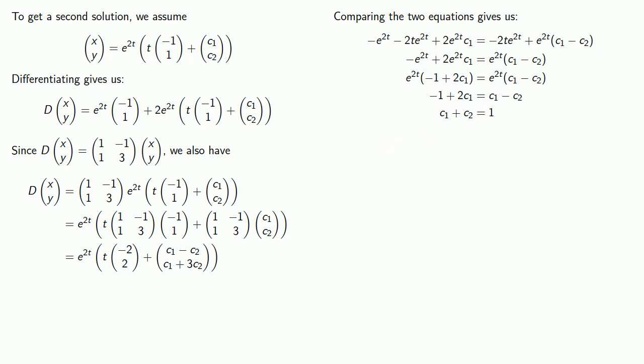What about the second component? So if we look at the second component, e to power 2t plus 2t e to power 2t plus 2e to power 2t times c2 plus 3c2, those are the second components from the first equation, must be equal to 2t e to power 2t plus e to power 2t times c1 plus 3c2.